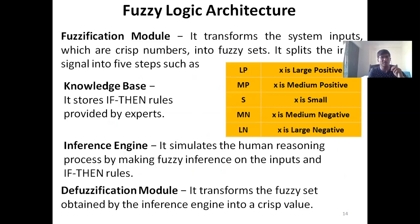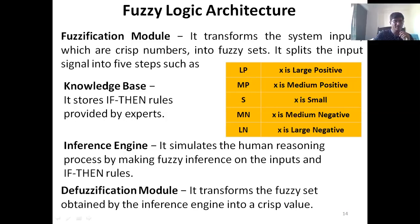Let us talk about the basic steps or basic components of a fuzzy system. We can divide all the basic components into — first is the fuzzification module, which is nothing but converting the value from the crisp set to a fuzzy set, the way we did in the previous example.